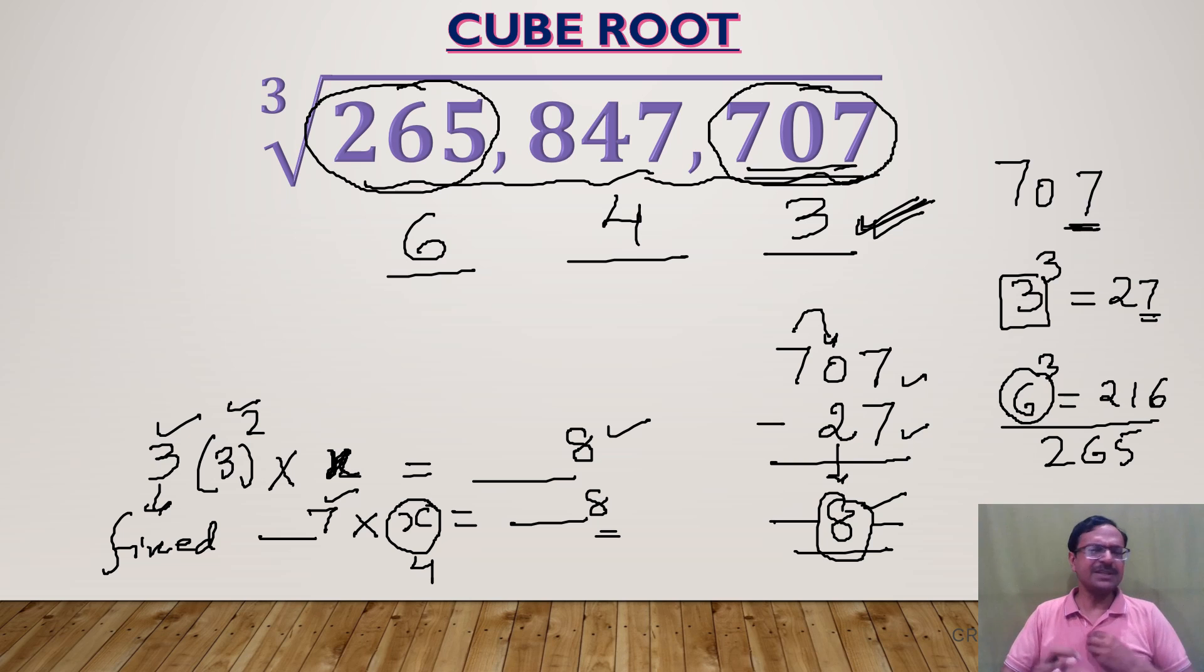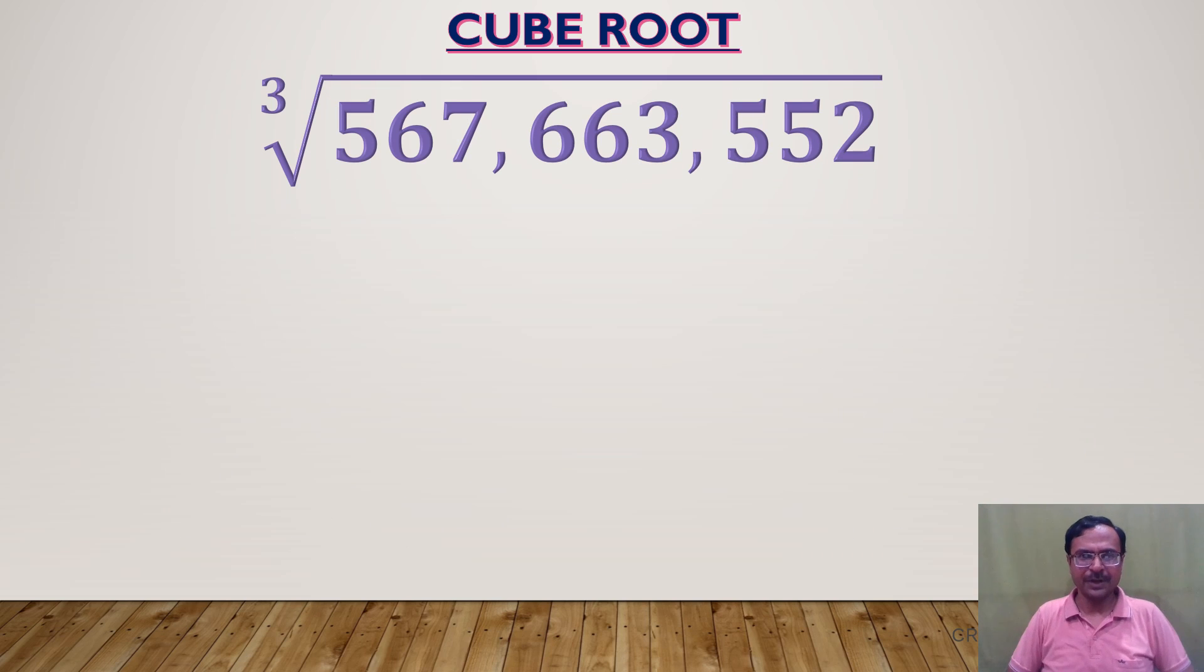Let's take another question. Look at this—a question in which the number is further increased. Look at the triplets here: 552, 663, 567.